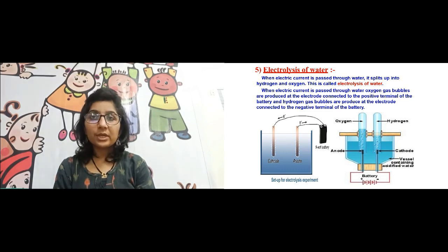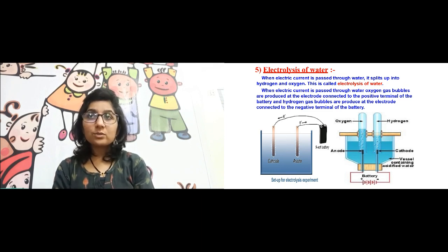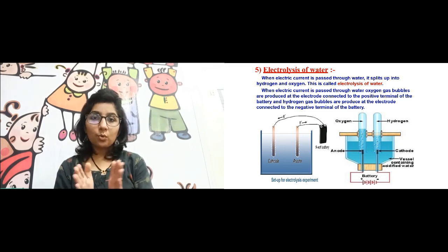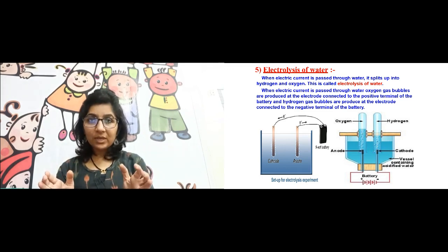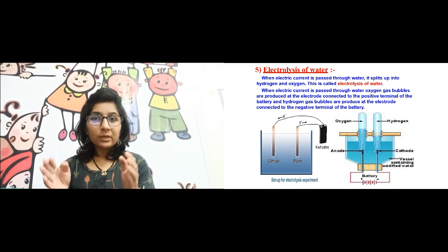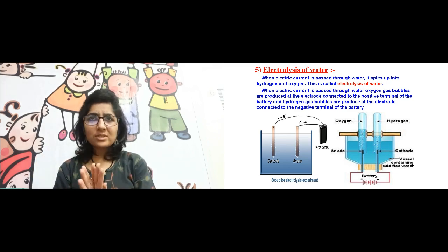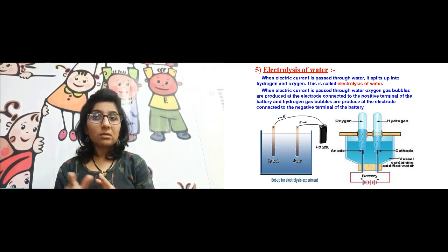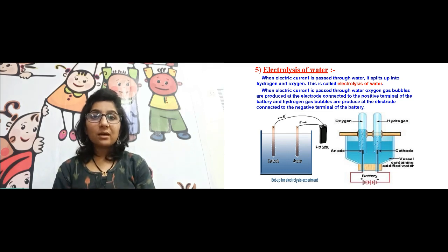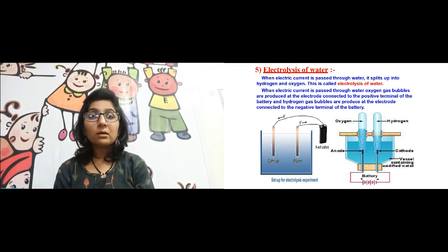In the electrolysis of water, when electric current is passed through water — which is H2O — it will split up into hydrogen and oxygen. In the setup shown on the right side figure, we have taken a tank or vessel with simple water, in which we have dipped two electrodes. The circuit is completed with a battery, and when we pass the electric current you can see gas bubbles produced near both electrodes.